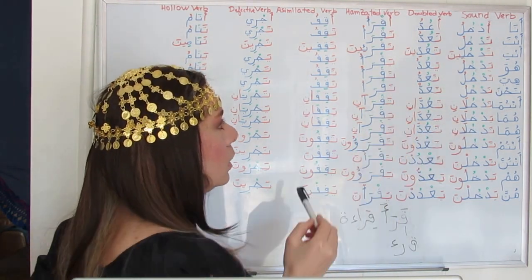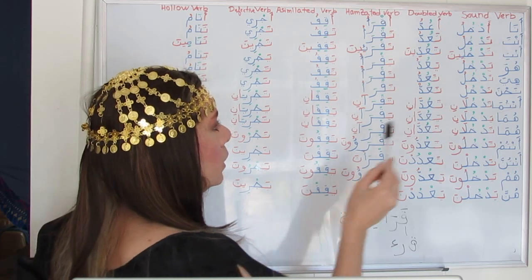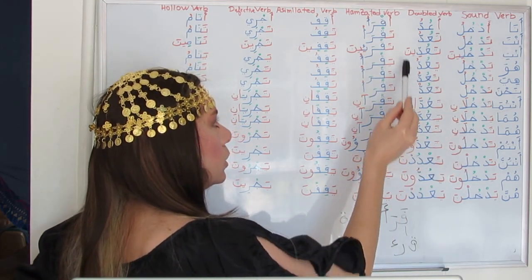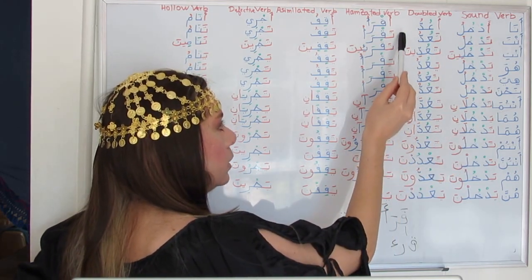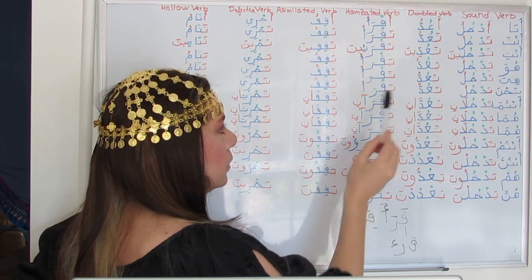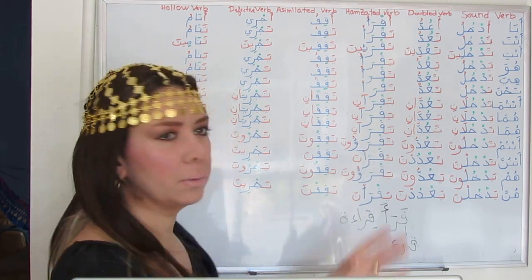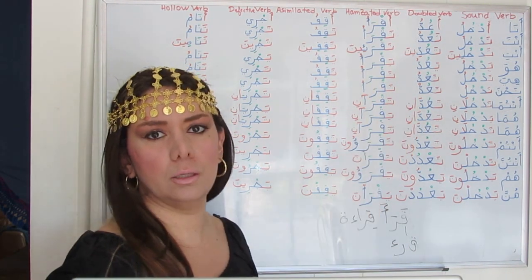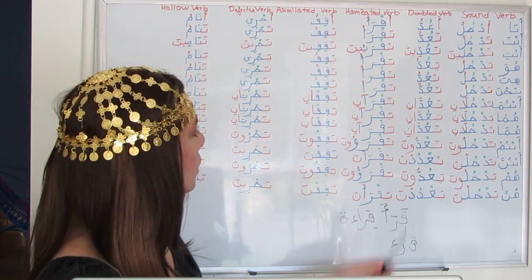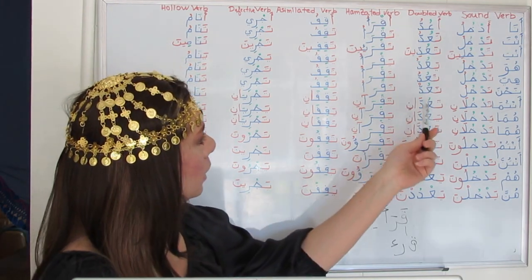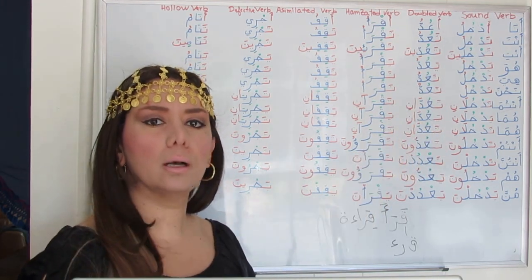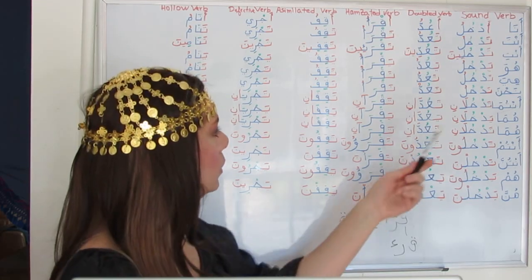Huwa yaqra'u. Hiya taqra'u — they are similar, just like anta and hiya. Some repetitions in the conjugation table. Nahnu — easy, with Nun: naqra'u.